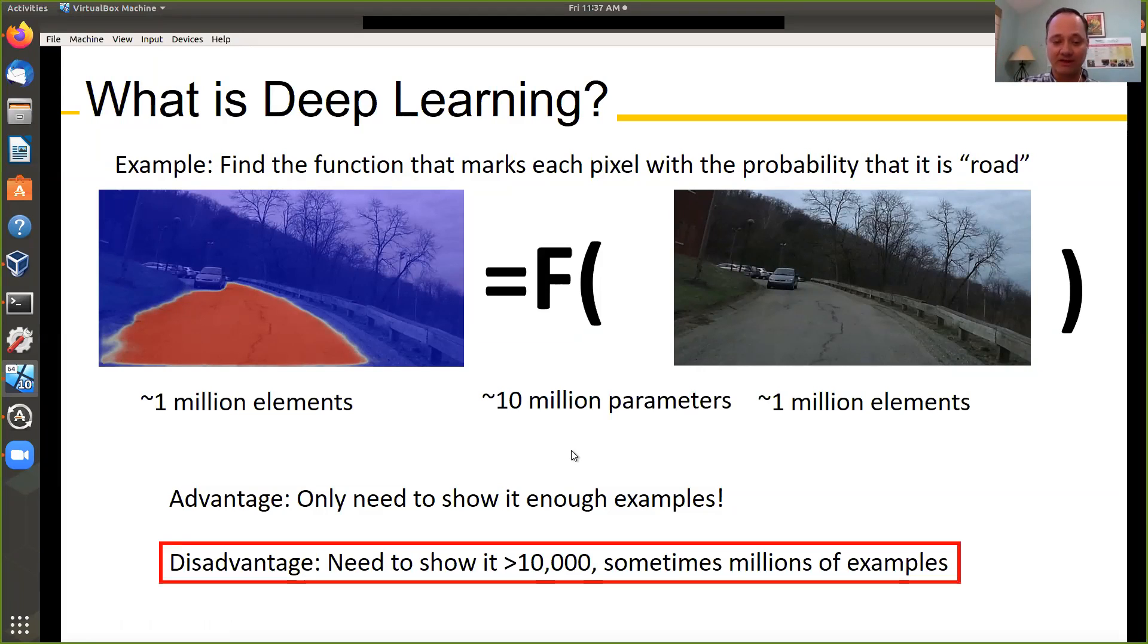The great disadvantage is you need about 10,000 or sometimes even millions of examples for the system to learn it. With landslides, it might be a little bit difficult because you might not find tens of thousands or millions of examples of landslides to train your deep network. But this is okay. This is a very brief introduction on what deep learning is.